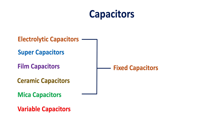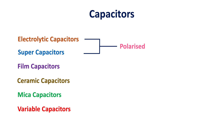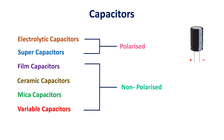In a variable capacitor, it is possible to change the capacitance within a certain range. Further, depending on the polarity, capacitors can be classified as polarized capacitors and non-polarized capacitors. Polarized capacitors have an explicit polarity, and the positive and negative terminals are marked on the capacitor, so they can be connected in the circuit only in one particular way. Non-polarized capacitors have no explicit polarity and can be connected either way.